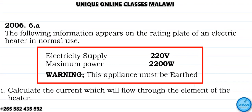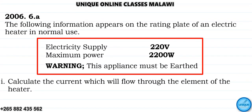The question gives the following information from the rating plate of an electric heater in normal use. The electrical supply is 220 volts and the maximum power is 2,200 watts. The first question asks us to calculate the current which will flow through the element of the heater.